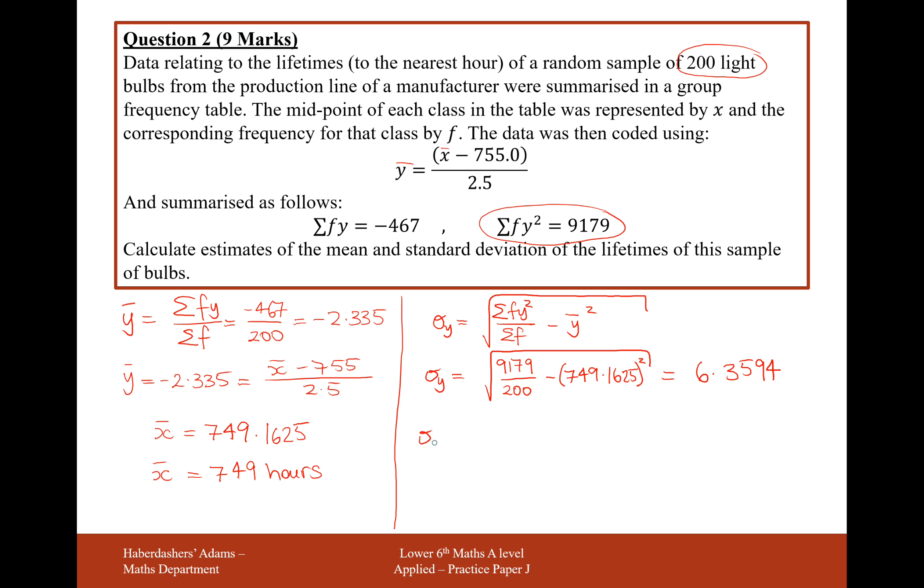Now to work out the standard deviation for X, it's not quite as simple as substituting into the formula. For standard deviation, because the location of the data doesn't matter, all that matters is how spread out it is, we're going to intentionally ignore this -755 piece. We're going to use sigma for Y = sigma for X / 2.5.